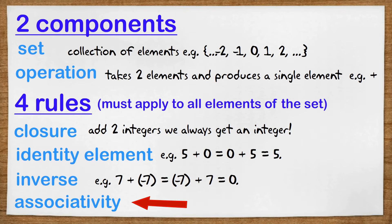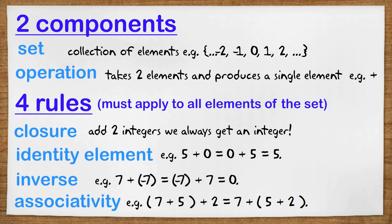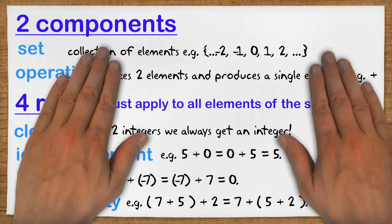And the final thing we need is associativity, and that says that if we have three elements and we have the operation performed twice, it doesn't matter which of the operations we do first. For example if we have these three integers, seven, five and two, it doesn't matter whether we go seven plus five and then plus two, or five plus two and then add the seven. Now let's go back to the exam question.